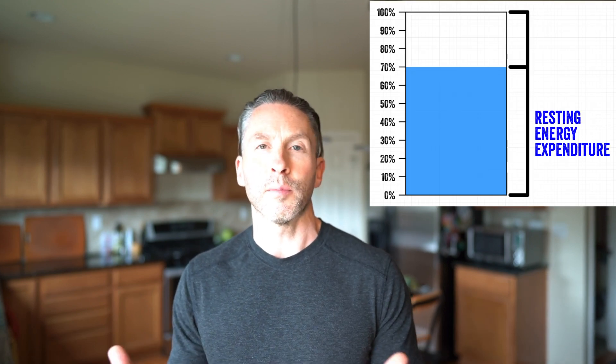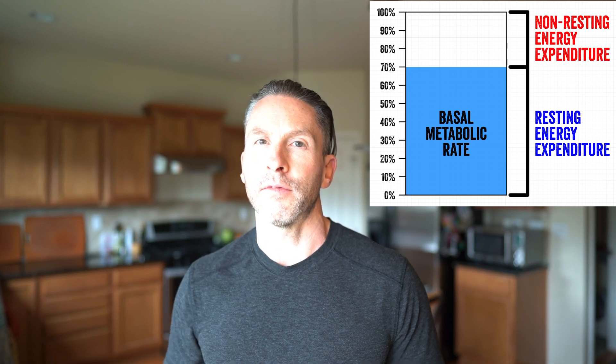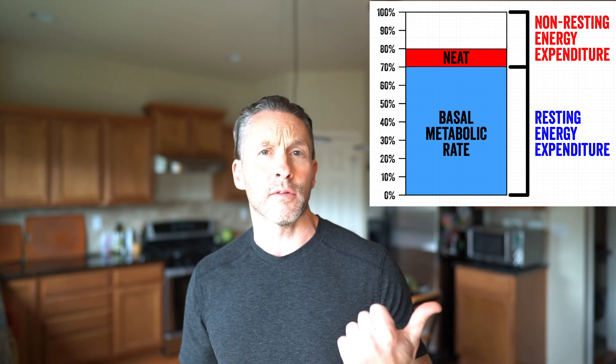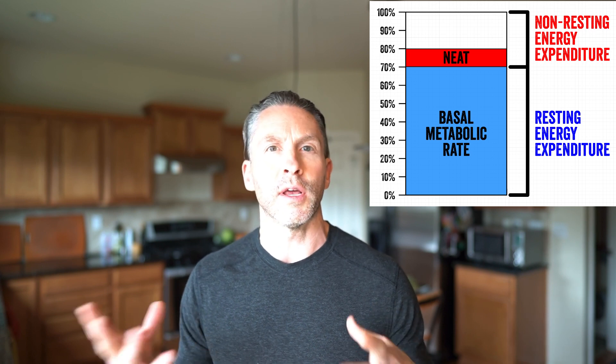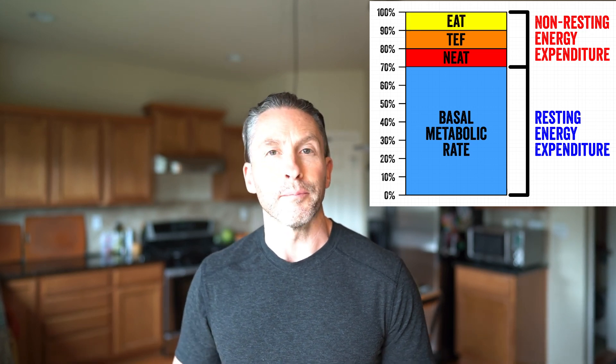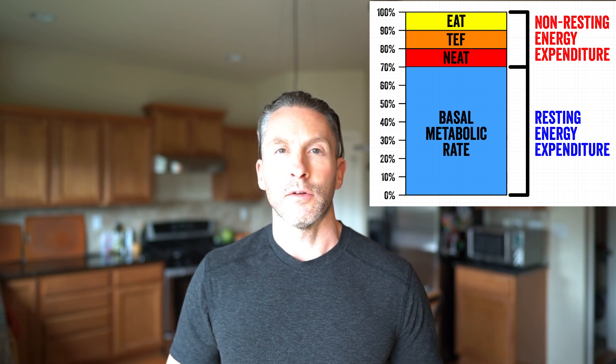You have calories in, which is the food you're eating, and then you have calories out. Calories out is a little more complicated. It's comprised of resting energy expenditure — your basal metabolic rate — and then non-resting energy expenditure, which is divided into non-exercise activity thermogenesis, which is just fidgeting and moving; thermic effect of food, which depends on what you're eating; and exercise activity thermogenesis, which is how much exercise you're doing. The problem with energy out is that you don't really know any of these.